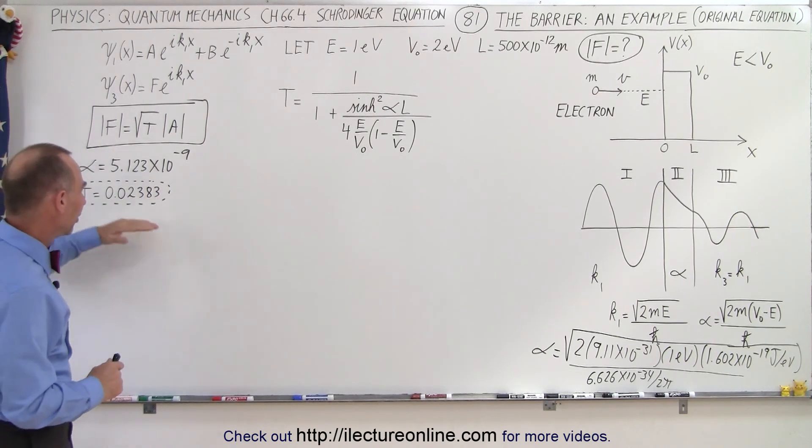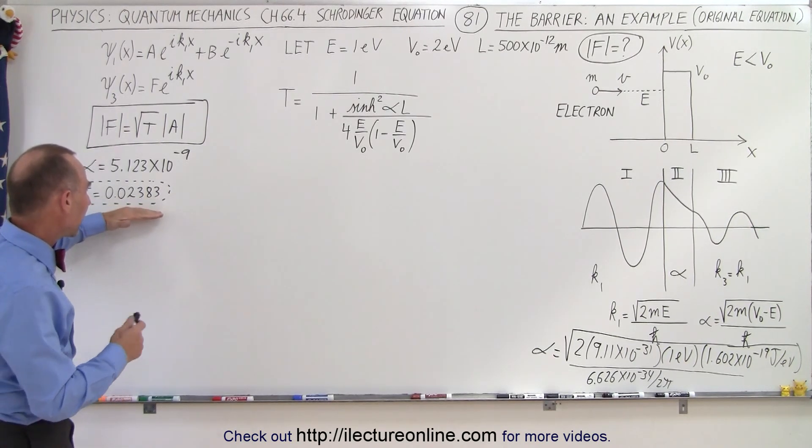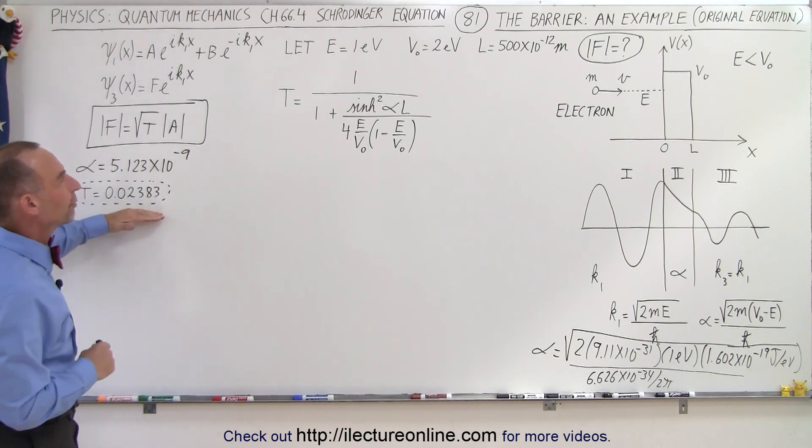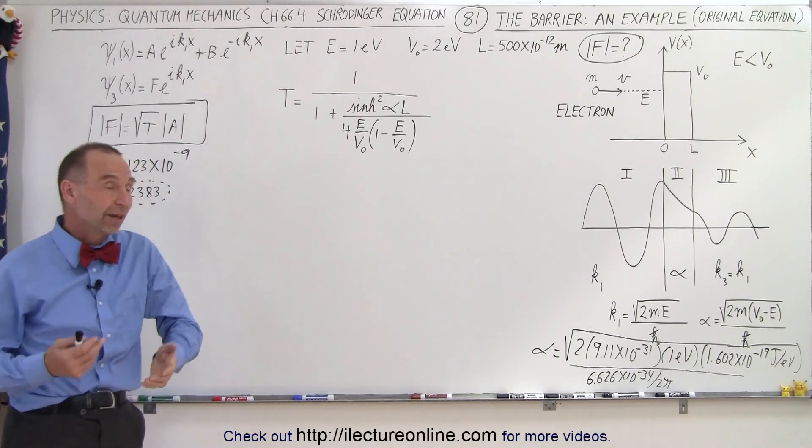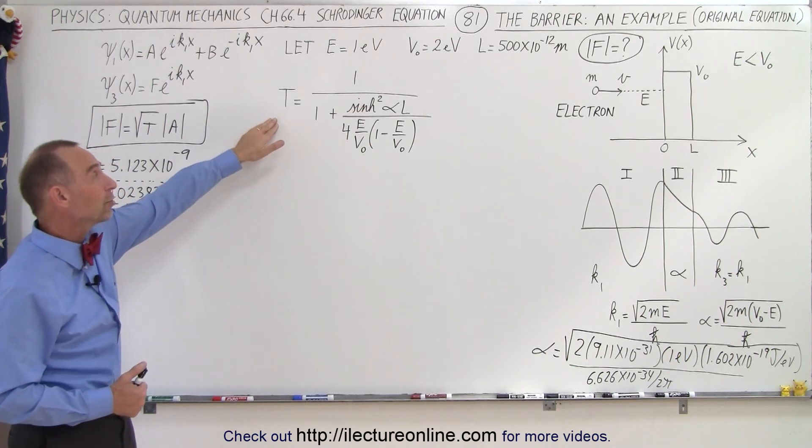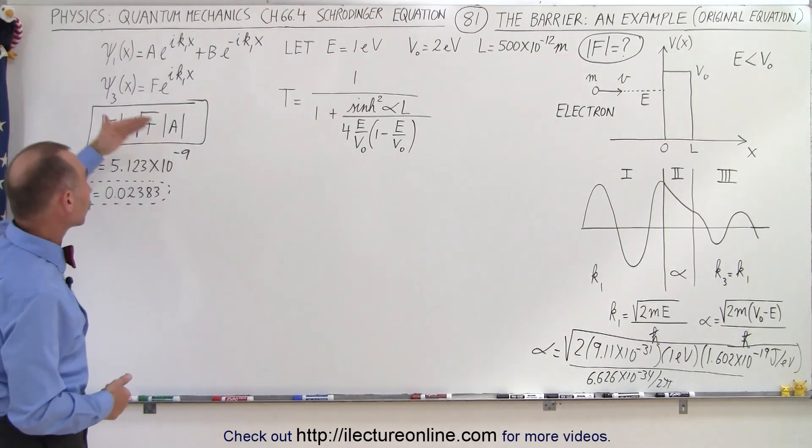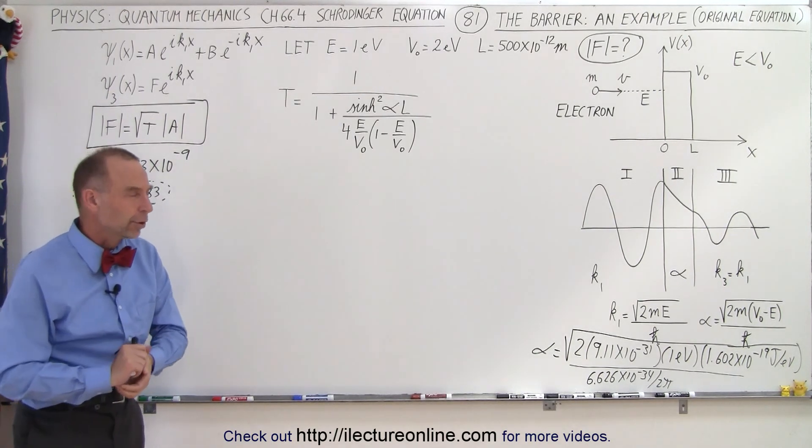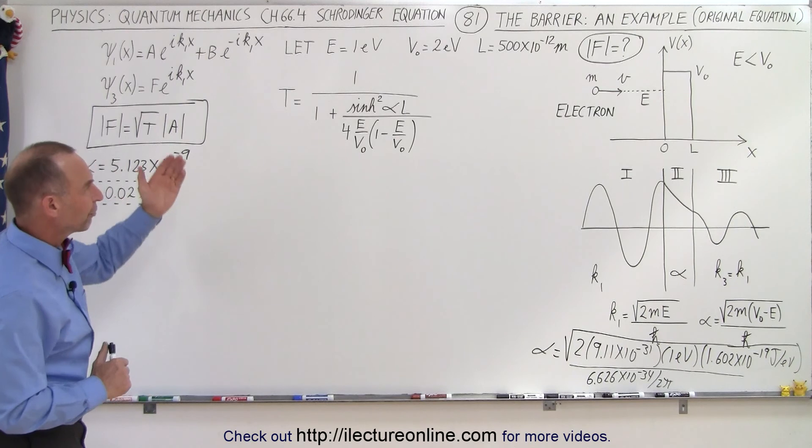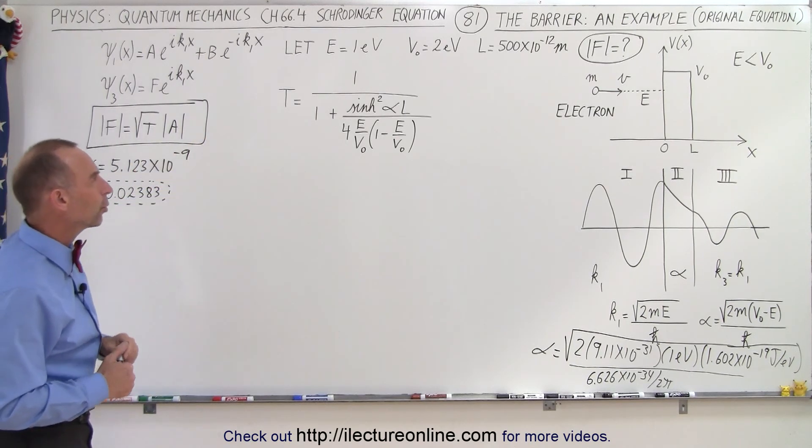I added one more decimal place, so this was the result that we got by using what we would call the simplified equation for the transmission coefficient. Now we're going to do the same thing using the original equation that's derived from the original Schrödinger equations when they were solved using the boundary conditions.